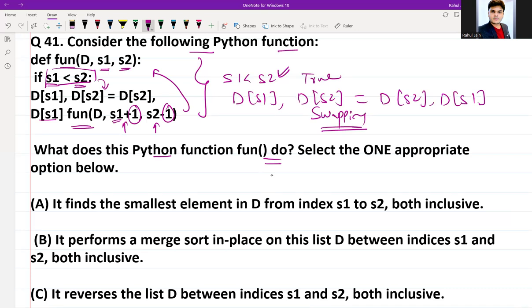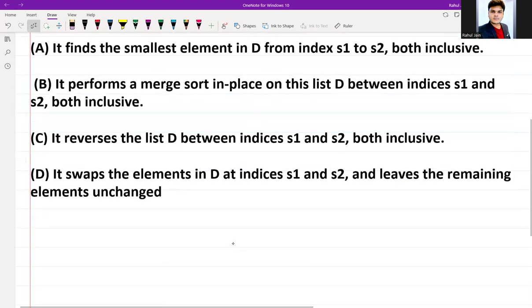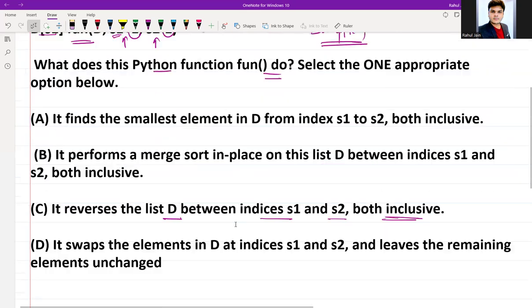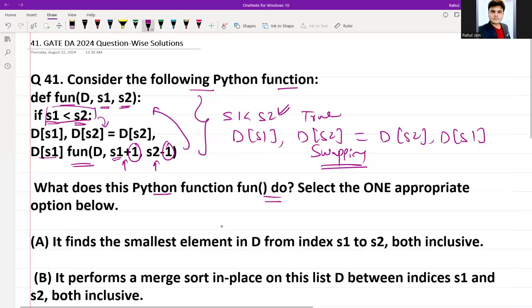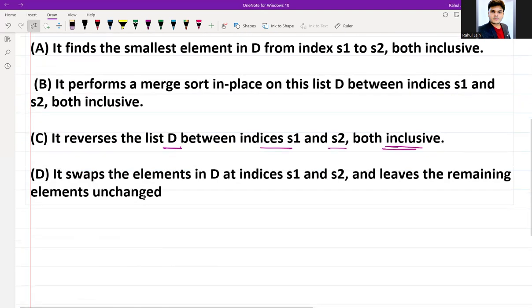Basically, if you go through option C, it reverses the list D between indices s1 and s2, both inclusive. You can see that it is going to reverse the list between the indices s1 and s2 until the condition is true.